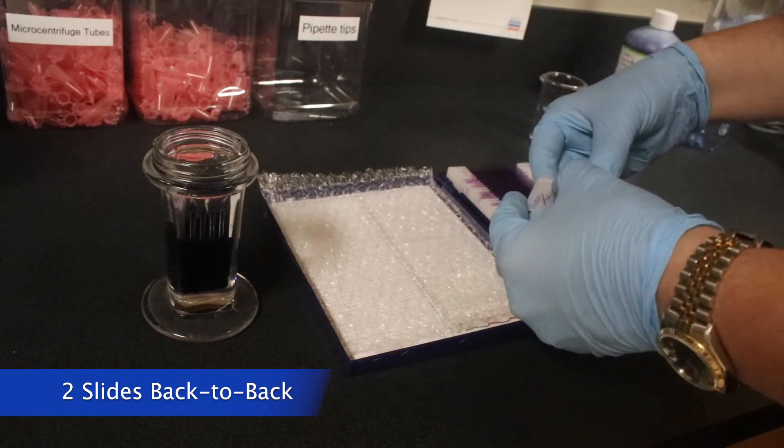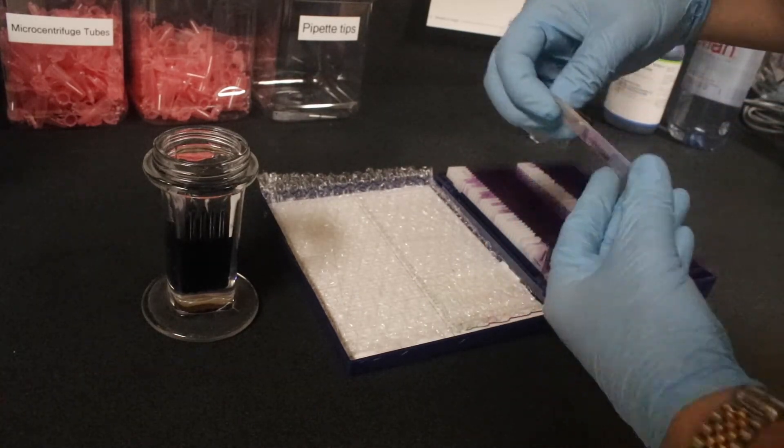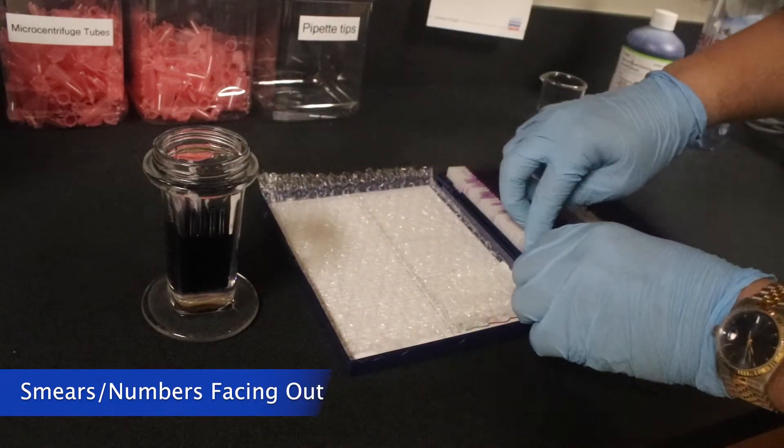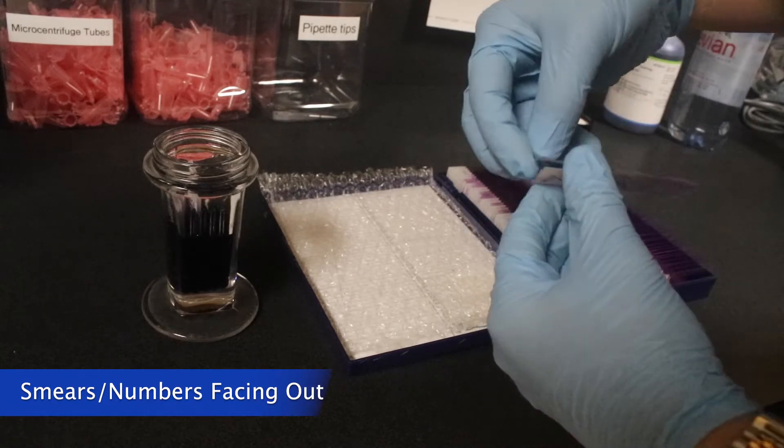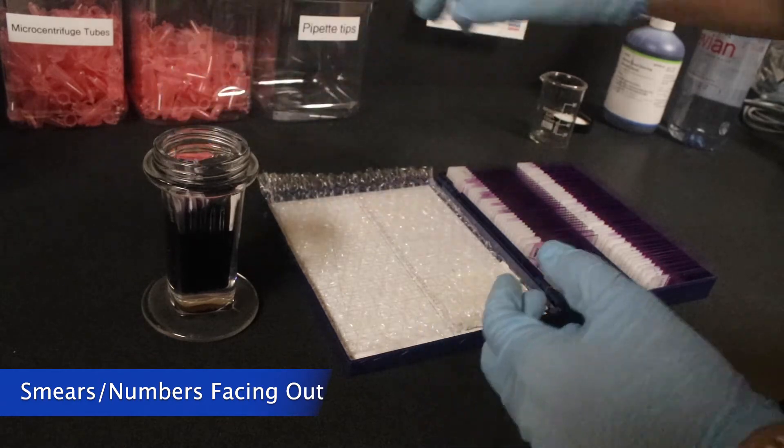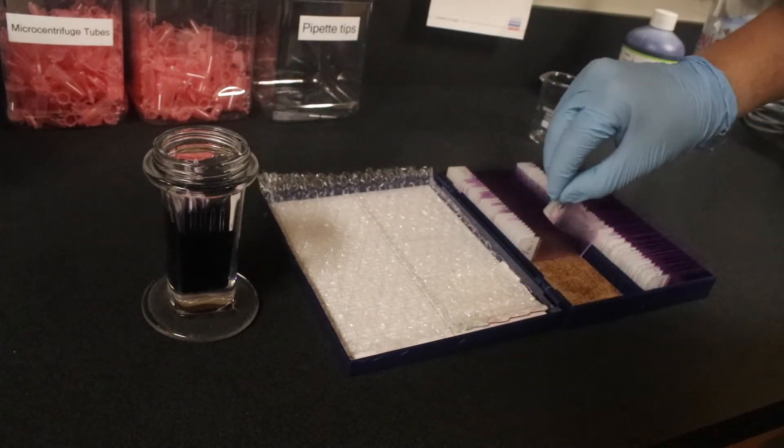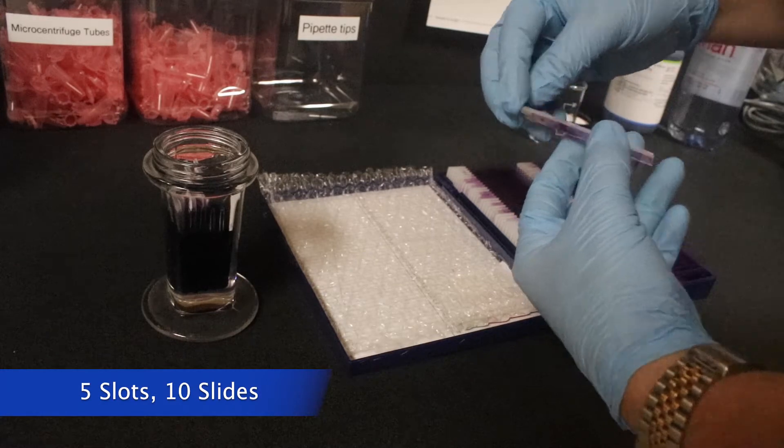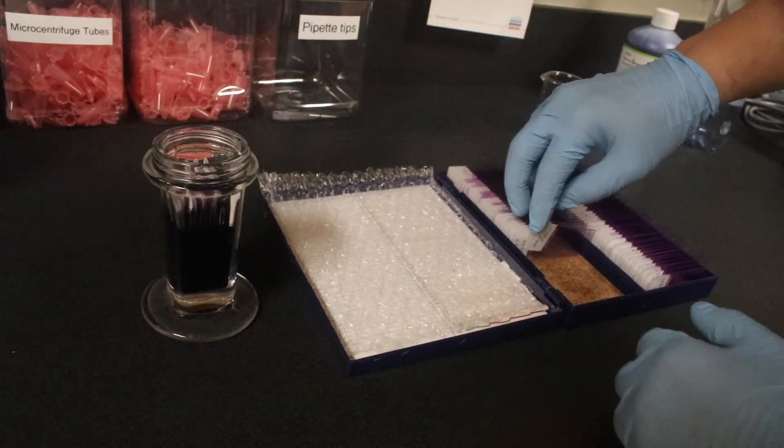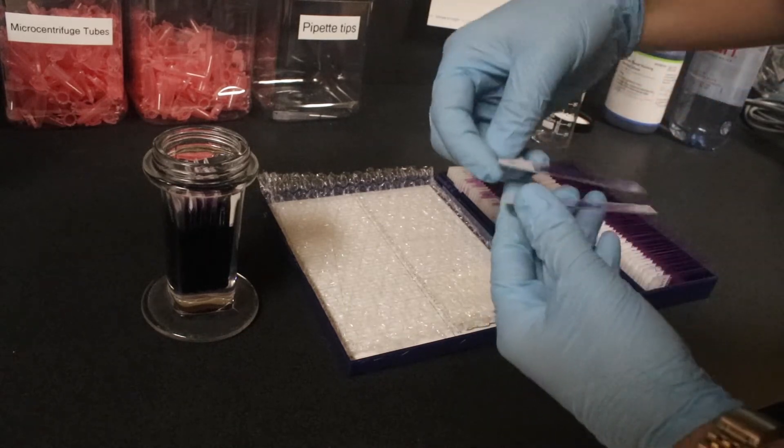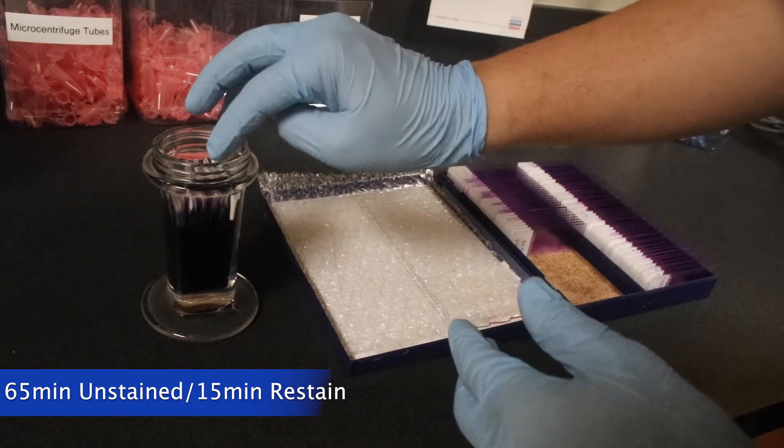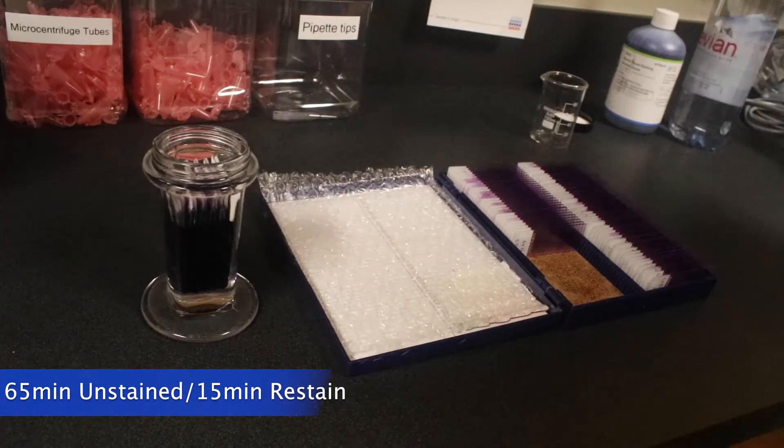So, what we do is we put the slides back to back with the smear facing outward, the smears of both of them facing outward. You want the numbers facing away from each other so that they can get stained, and you fit them all five slots, 10 slides, and you're going to leave them in for either 65 minutes for an unstained slide or 15 minutes for a restain.